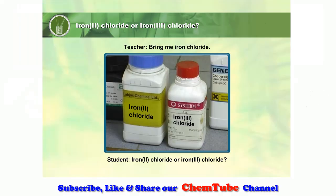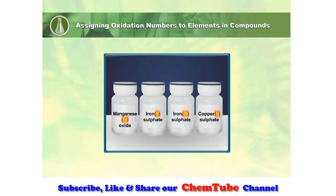Why do you think there is a difference between iron two chloride and iron three chloride? What do the Roman numerals represent? These Roman numerals represent the oxidation numbers for the metal in the compound. Oxidation number refers to the imaginary charge of an atom. It is also known as oxidation state.